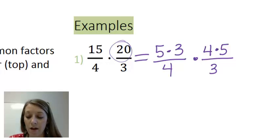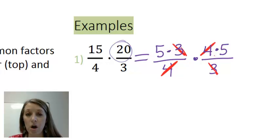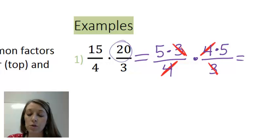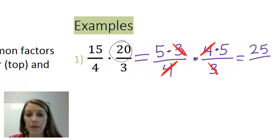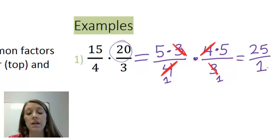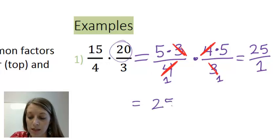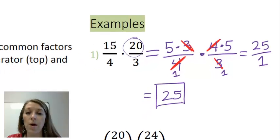I see 4s in common, so I can reduce the 4 on the bottom and the 4 on the top. I also see 3s in common, so I reduce the 3 on the bottom and the 3 on the top — anything between top and bottom can cancel. I do have 5s left in common, but they're both in the numerator, so I cannot cancel them. Moving to step 3, I multiply straight across: on top I have 5 times 5, which gives me 25, and the bottom is fully reduced so it's 1. This gives 25 over 1. Anything divided by 1 is just itself, so the final answer is 25.